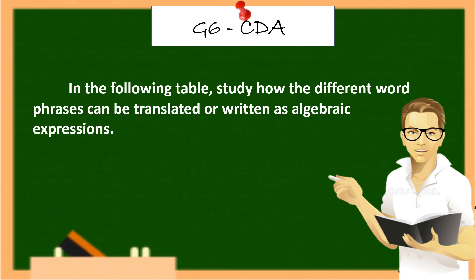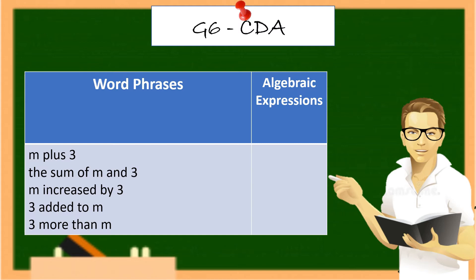In the following table, study how the different word phrases can be translated or written as algebraic expressions. Word and phrases. Here are some examples. M plus 3. The sum of M and 3. M increased by 3. 3 added to M. 3 more than M. And the algebraic expression should be written like this: M plus 3.